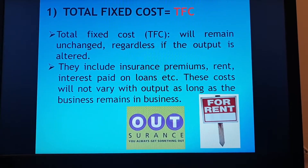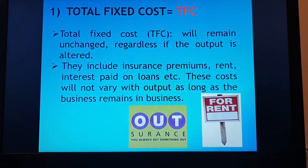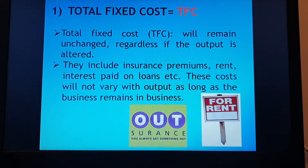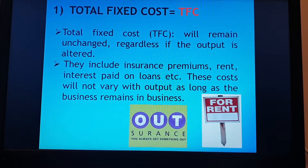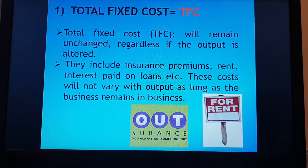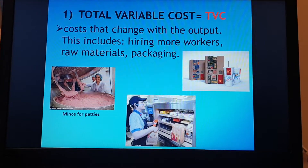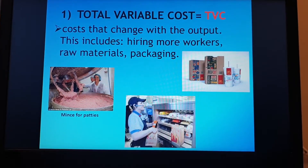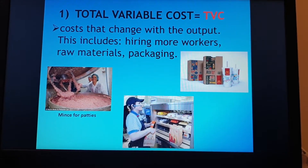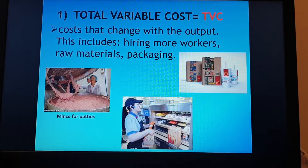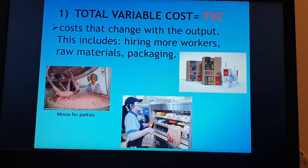Total fixed cost will remain unchanged regardless of whether output is altered. Even if output increases, total fixed cost always remains the same. It includes insurance premiums, rent, and interest paid on loans — these costs will not vary with output as long as the business remains in business. Total variable cost (TVC) changes with output; this includes hiring more workers and paying more wages, raw materials, factors of production, and packaging.